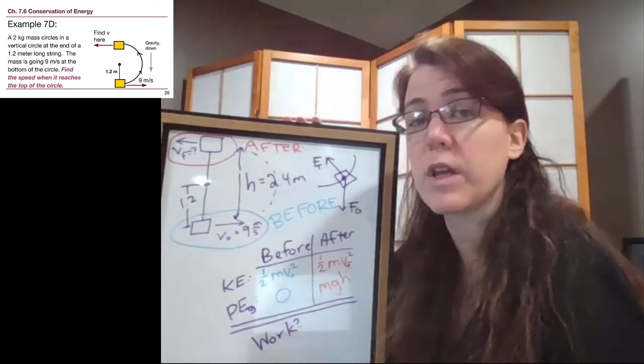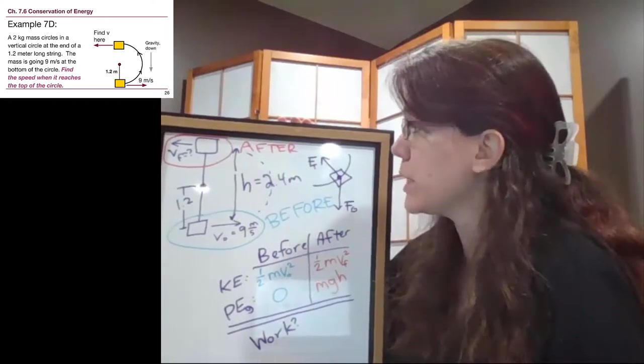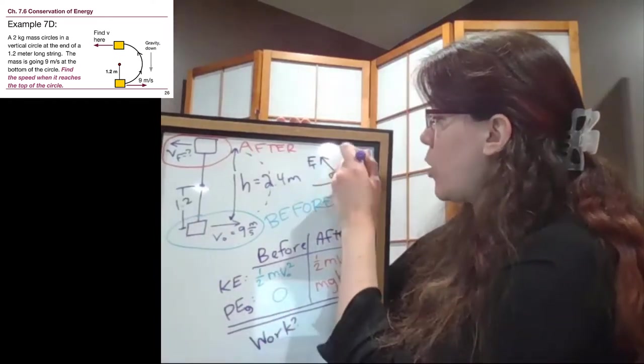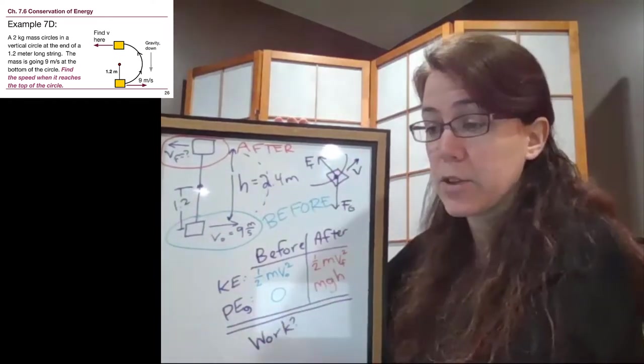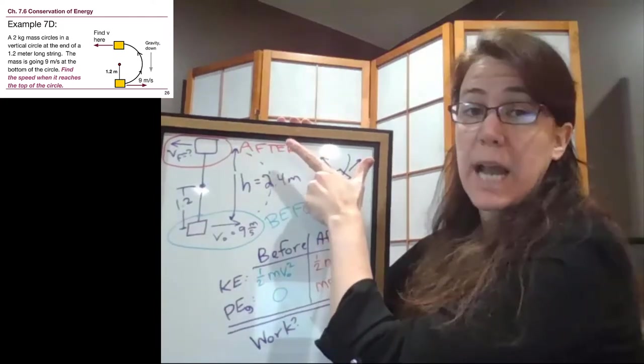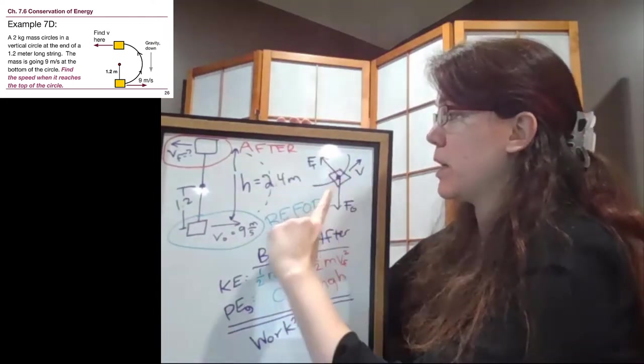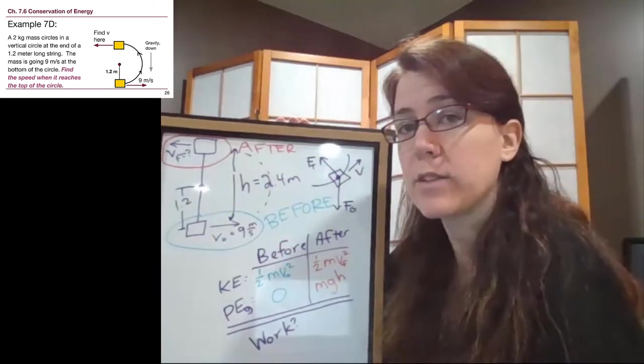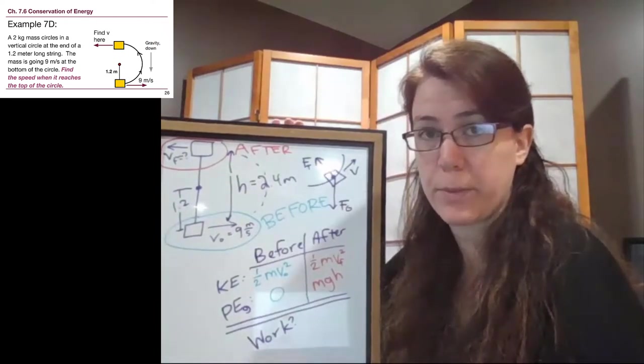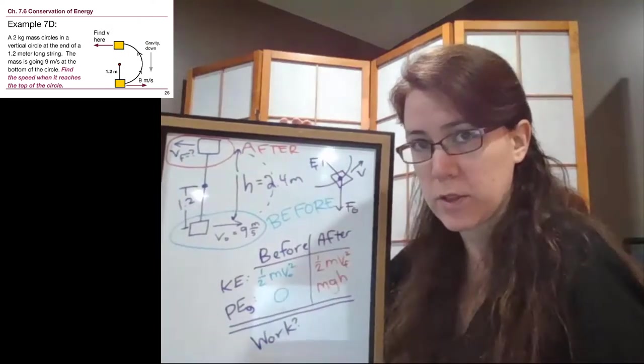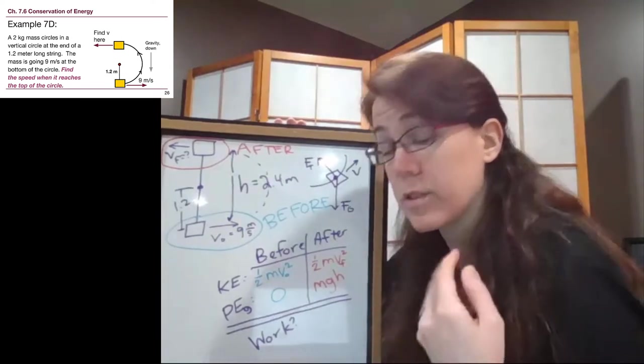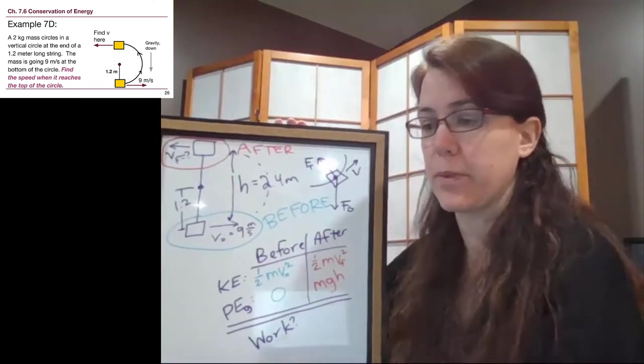So what we're looking for are other forces that might be causing work terms. The only other force here is tension and there's something really important to notice about that. The tension is always pointing towards the center and the speed, the motion, at any given point in the picture is perpendicular to the circle. So there is always a 90 degree angle between where tension is pointing and where the motion is. And since work has to be force in the direction of motion, tension will not be able to contribute a work term. So if you need to rewind that and listen to it again, that's important for us. Tension will not be able to contribute a work term because it does not have any component in the direction of motion.